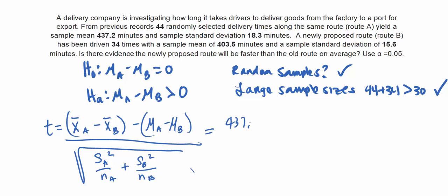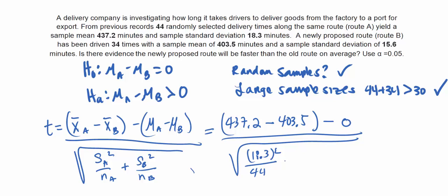So we get 437.2 minus 403.5 minus our claimed amount, which happens to just be 0, all divided by the square root of 18.3 squared over our sample size of 44 plus 15.6 squared, all divided by the sample size of 34, which equals a numerator value of 33.7 divided by the denominator of 3.84.